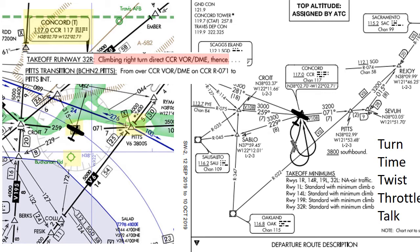Now we get station passage over CCR with a 'to' flag flipping to a 'from.' The five T's at this point are: turn to 071 to start; time — go ahead and start a timer; twist to 071 so that we can start tracking that radial and course, and make sure OAK is still set in our number 2 with the 022 radial; throttle — we have to ask for a climb if we haven't been given one yet, because we were at 3,000 and the altitude for this transition is 3,200; and talk only if asked to by departure — and by this point we would for sure be switched to departure.